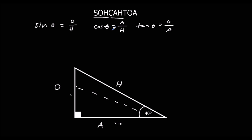We only use one of these — sin, cos, or tan — at a time. In our question, X is O, and A is with 7. H is by itself, so we're not using H in this question. Since sin and cos both have H in them, we're using TOA in this question.